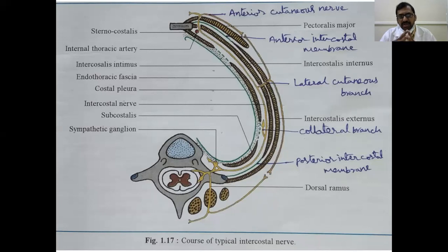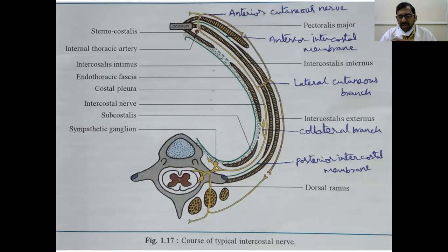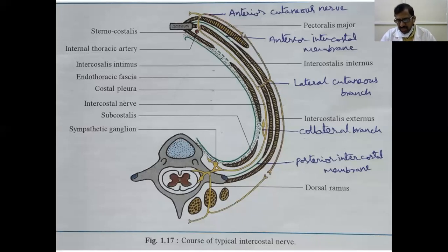The internal thoracic artery is very important clinically because it is most commonly used for coronary artery bypass grafting. Because it is closely related with the heart in its course, one end may be attached to the coronary arteries and the other end to the internal thoracic artery. Branches of the internal thoracic artery include: pericardiacophrenic artery, anterior intercostal arteries, perforating arteries, musculophrenic artery, and superior epigastric artery.